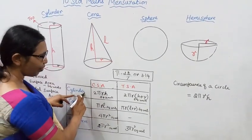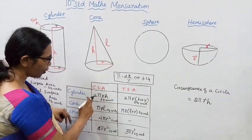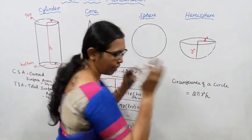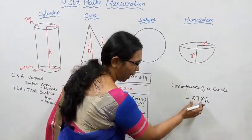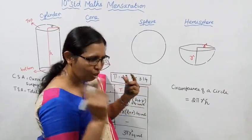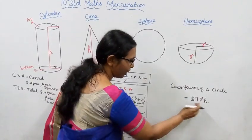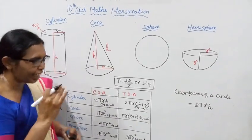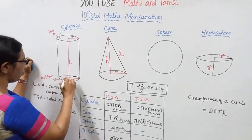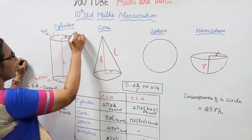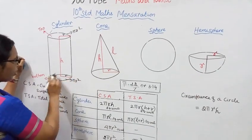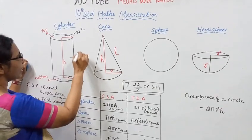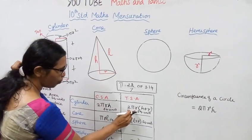For a right circular cylinder, the CSA is derived from the rectangle: breadth is 2πr (circumference of circle) and height is h. So CSA equals 2πrh. The TSA adds the top and bottom circular areas, each πr², giving TSA = 2πrh + 2πr², which simplifies to 2πr(h + r).